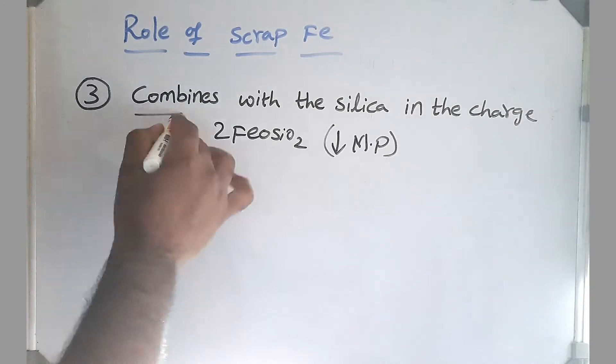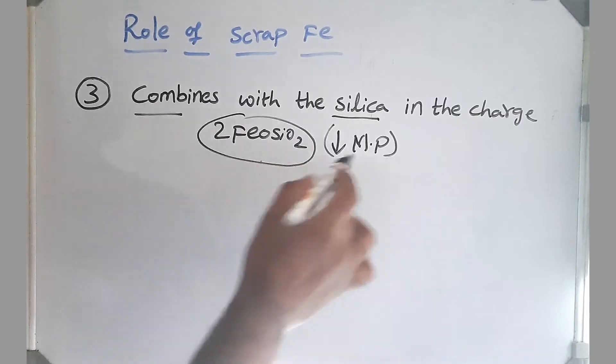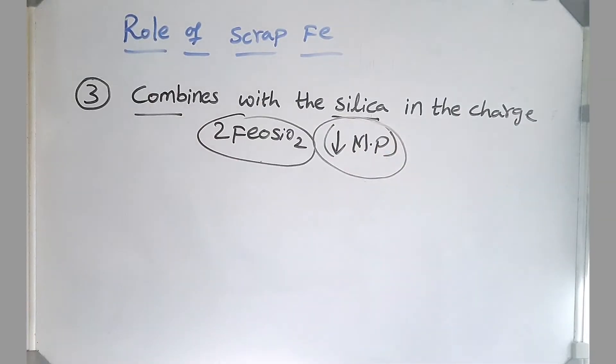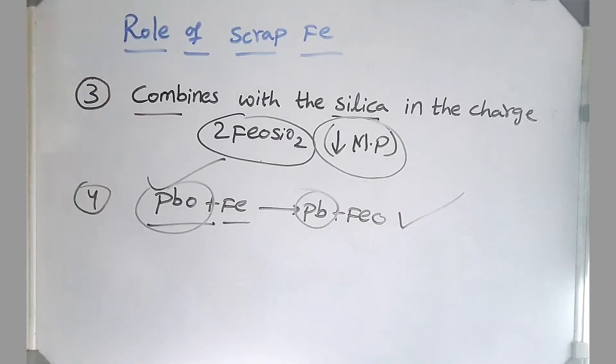Iron combines with any presence of silica in our charged material and it forms the same component 2FeO·SiO2 and it also reduces the melting point of the slag. So which makes the slag less viscous which means fluidity of the slag is more. And last step it also helps in reducing lead from lead oxide as well. So additional scrap iron has all these functions. So it is very important to add scrap iron in our lead blast furnace. It makes the process more easier and it recovers a lot of lead from the slag so that the productivity of the process is very good.